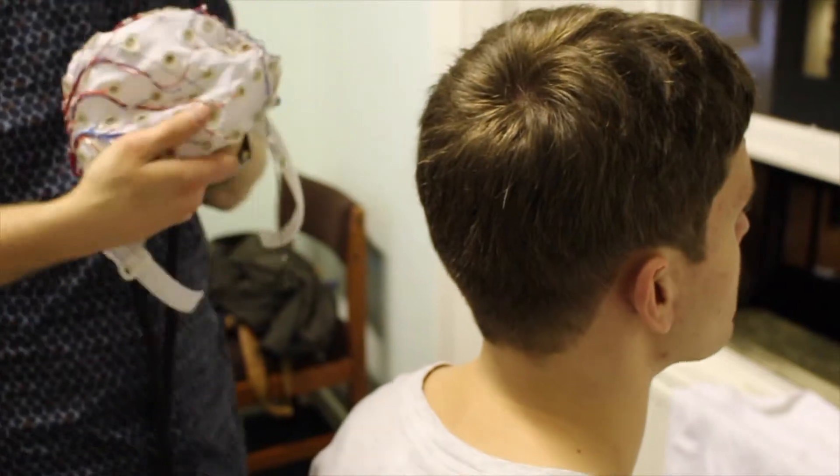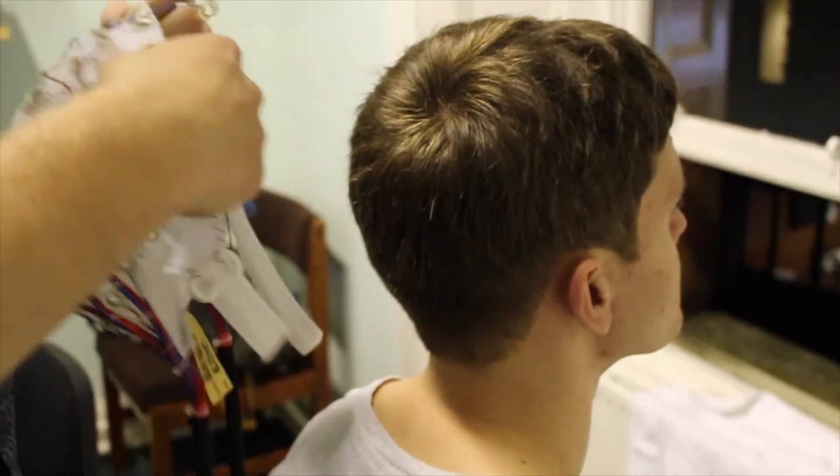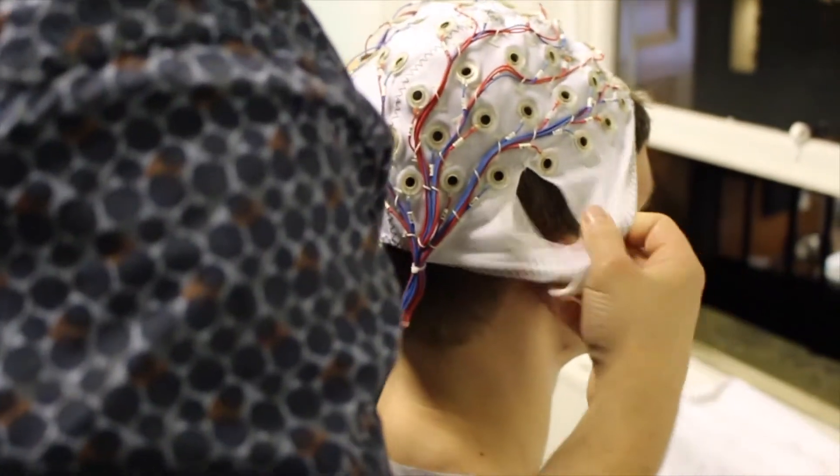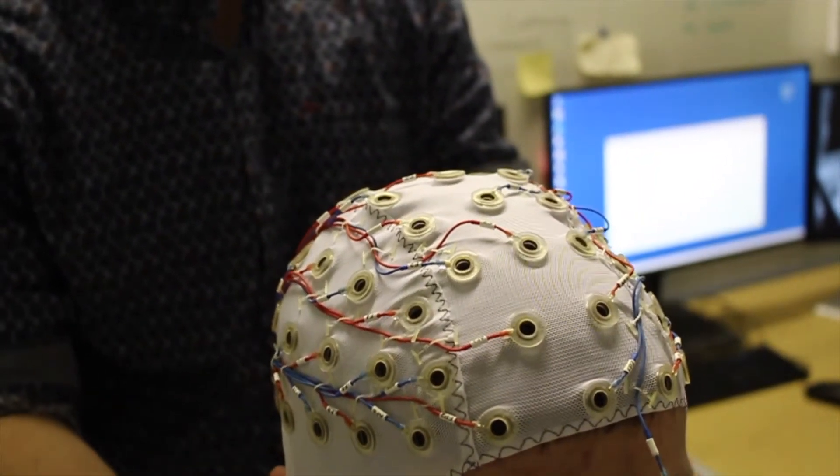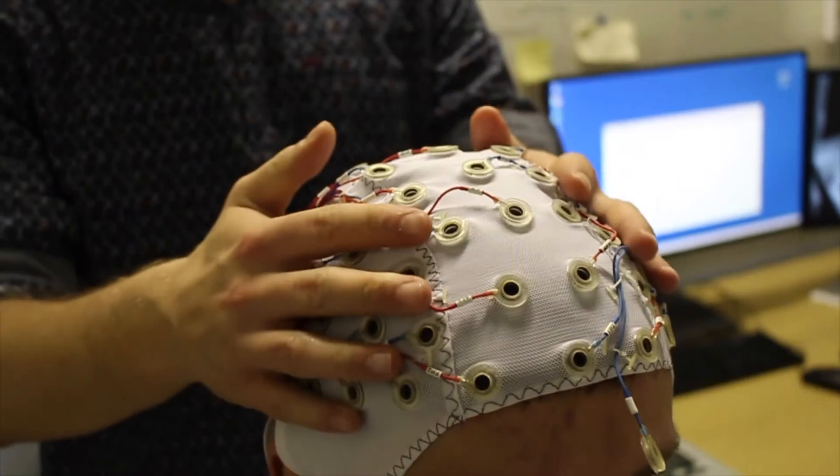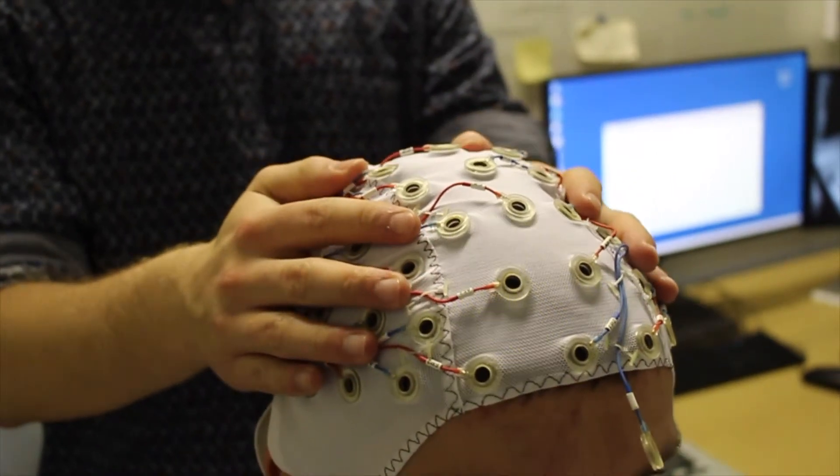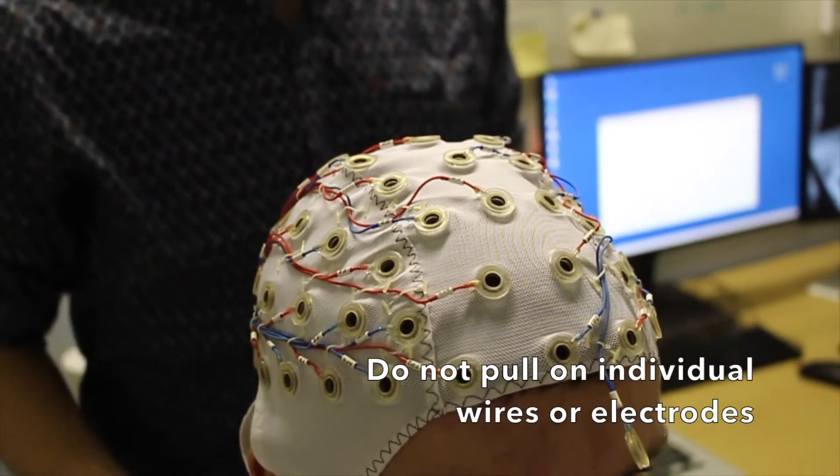The cap goes on a bit like a swimming cap, so you should stand either in front of the participant or behind them, and lower the cap onto their head. Try and keep the electrodes lined up straight along the head while you do this.